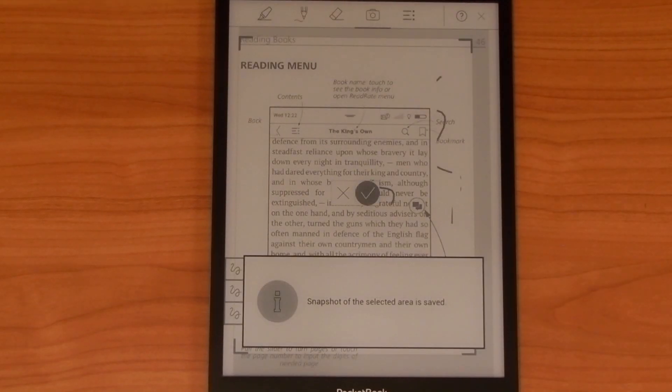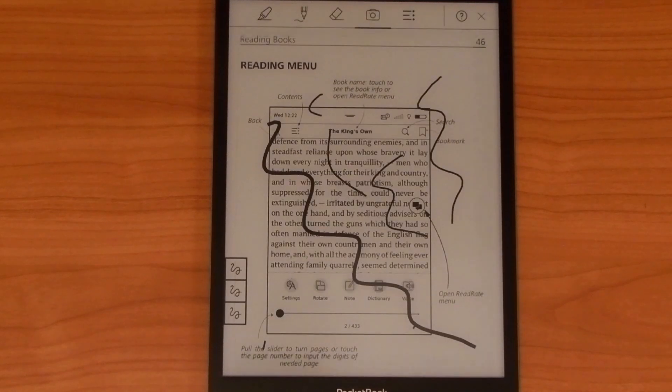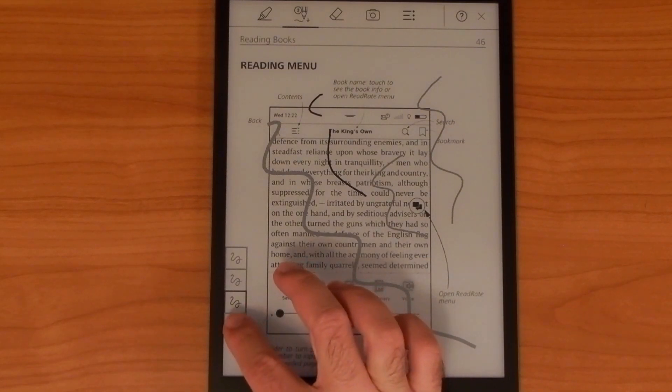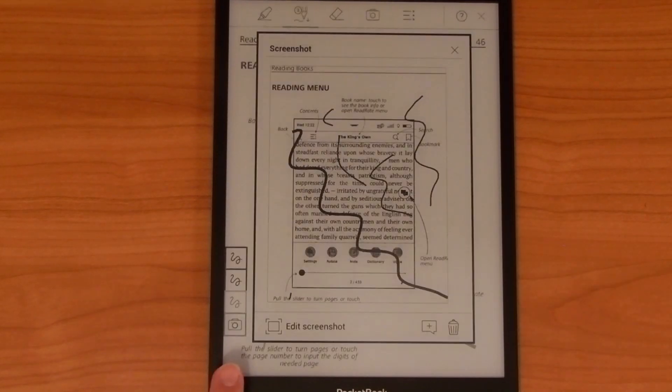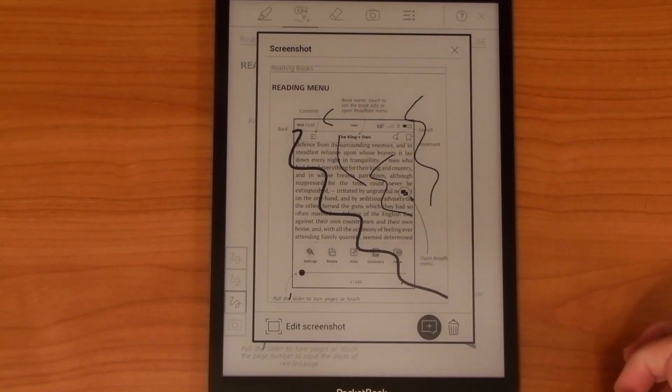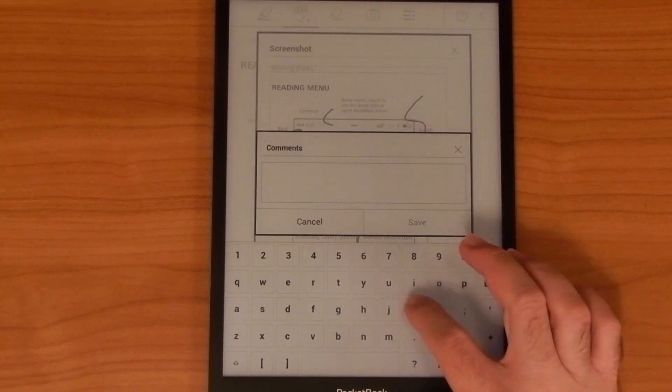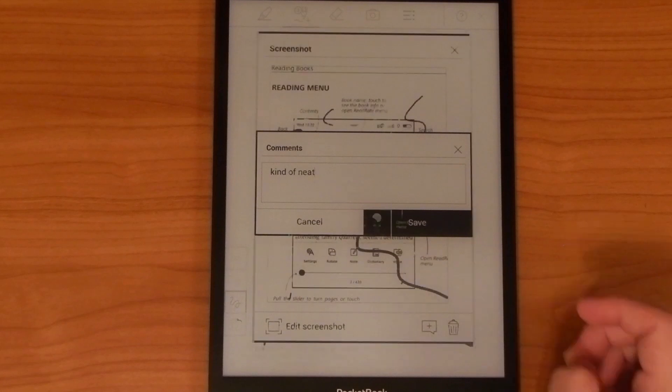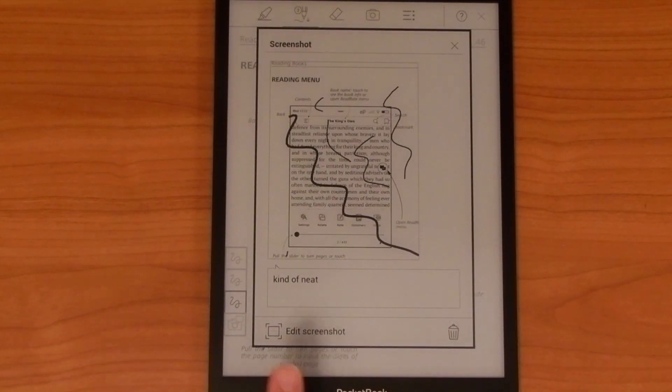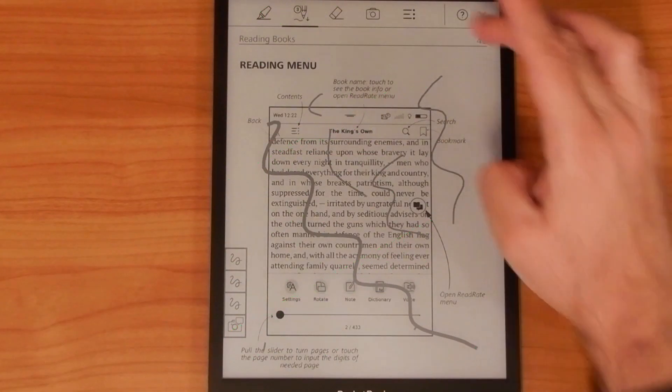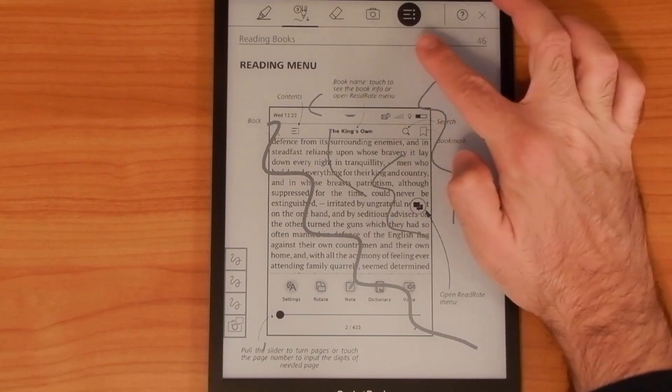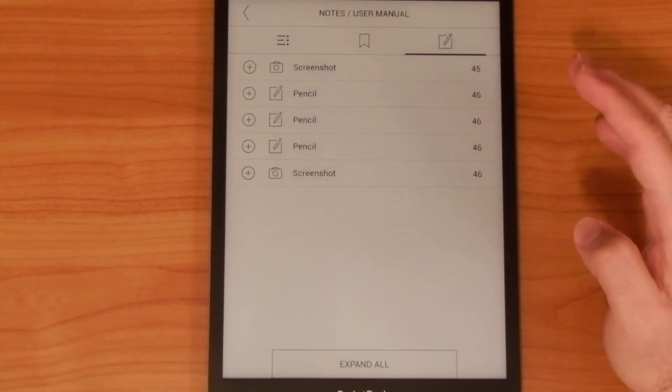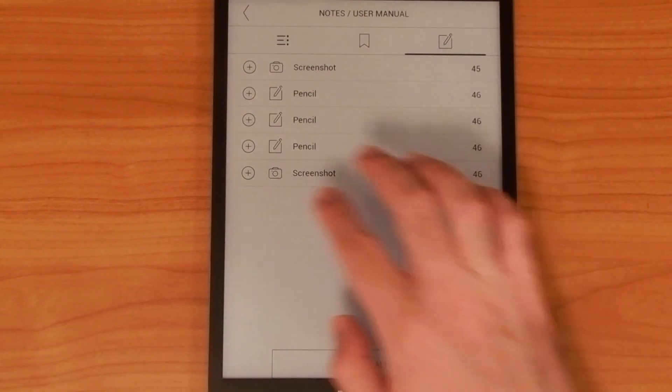Once you take the screenshot, you can tap the icon that appears on the side of the screen to see a thumbnail of the screenshot in document, and you can then choose to either comment the screenshot, edit it or delete it. Lastly, you have the table of contents quick access icon. Tapping this will display the pages where you've made your scribbles and annotations.